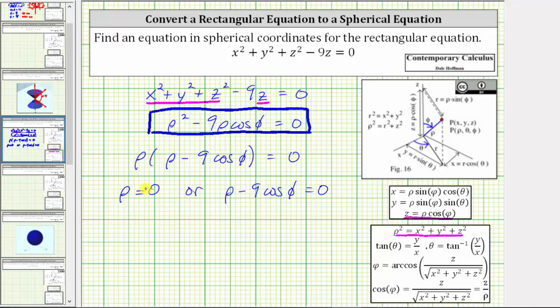Well this equation is already solved for rho. To solve this equation for rho, we add nine cosine phi to both sides, which gives us rho equals nine cosine phi.